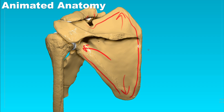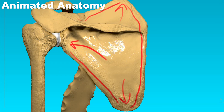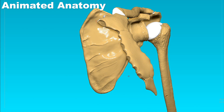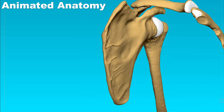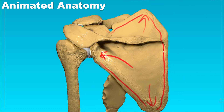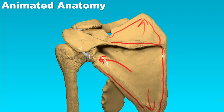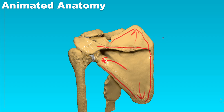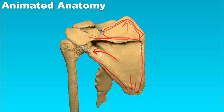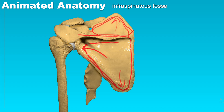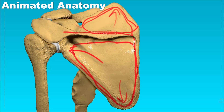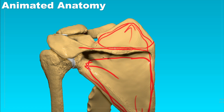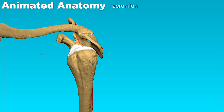The scapula has two surfaces. What we see here is the dorsal surface, and on the opposite side at the front is the costal surface. The dorsal surface is divided in two by an elevation called the spine, which divides it into the supraspinatus fossa — where the supraspinatus muscle originates — and the infraspinatus fossa — where the infraspinatus muscle originates. The spine becomes more elevated and eventually ends in a flat projection called the acromion process.